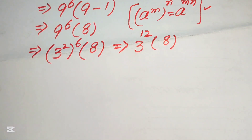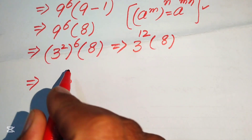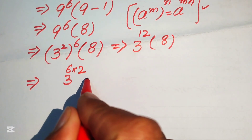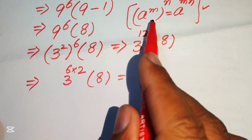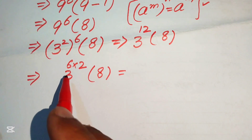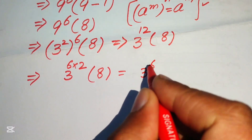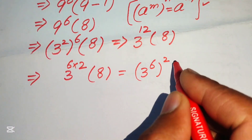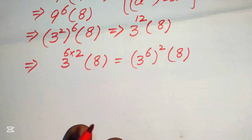We focus on the exponent 12 and write it as 6 times 2, so 3^12 becomes (3^6)^2. We rewrite the expression as (3^6) whole squared, multiplied by 8. Now we need to find the value of 3 to the power of 6.